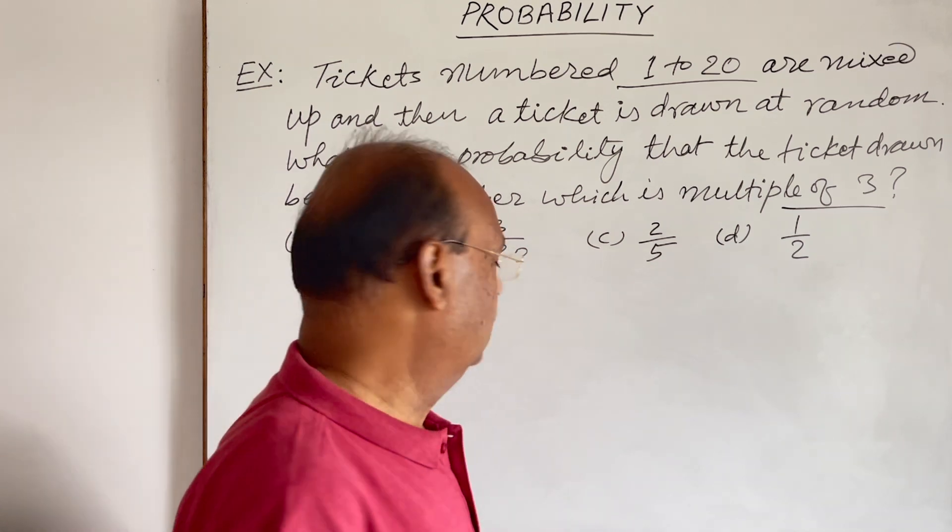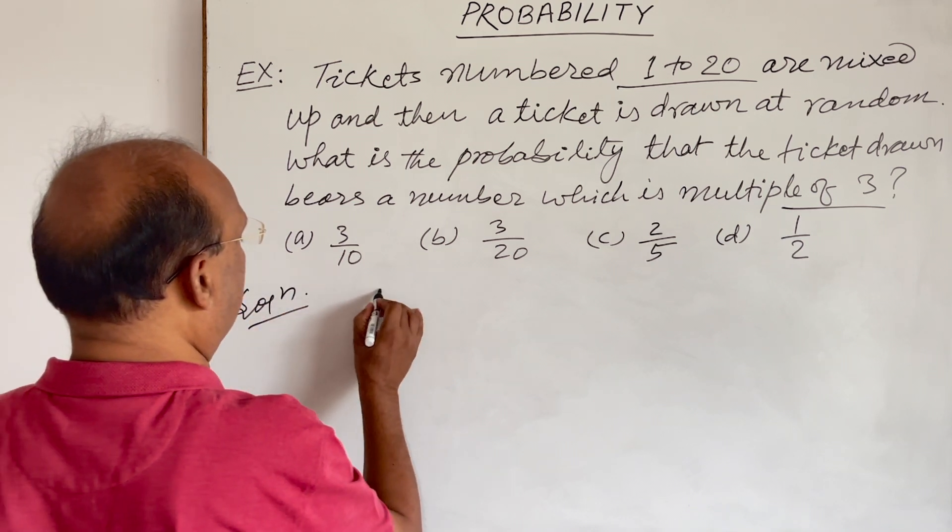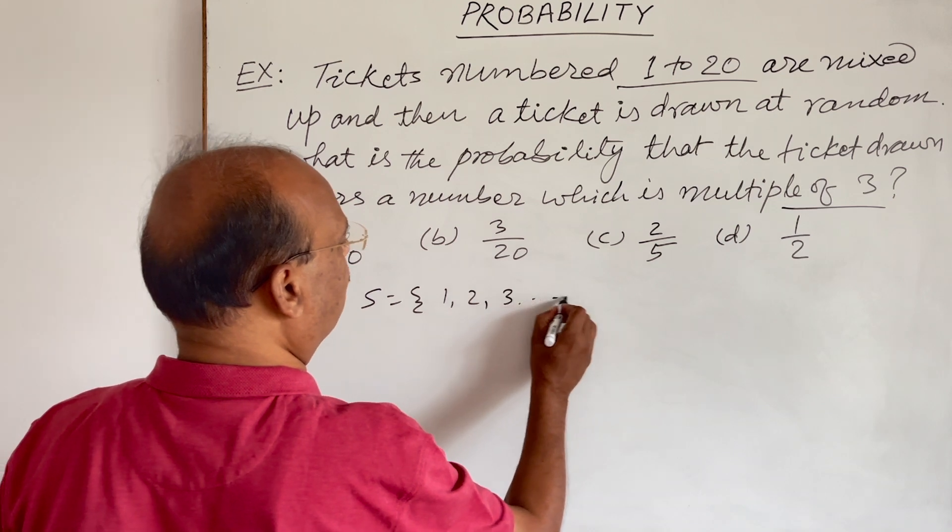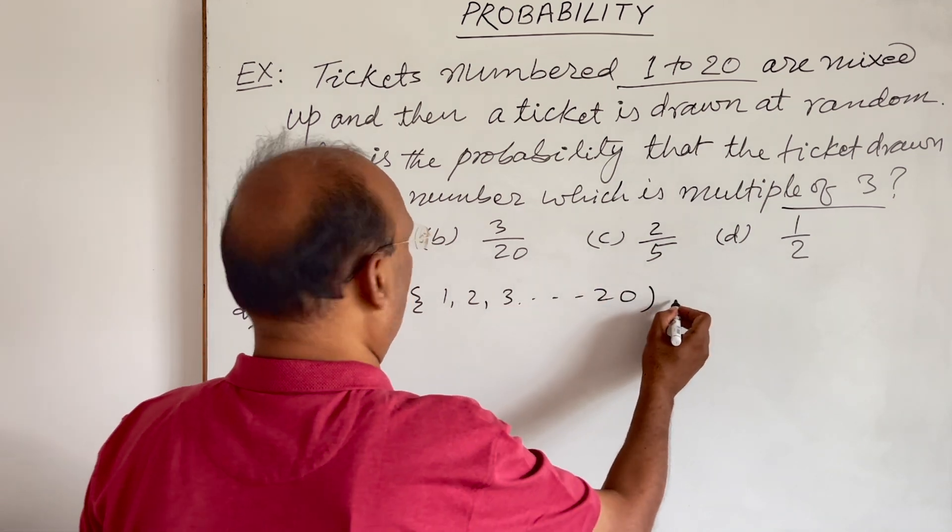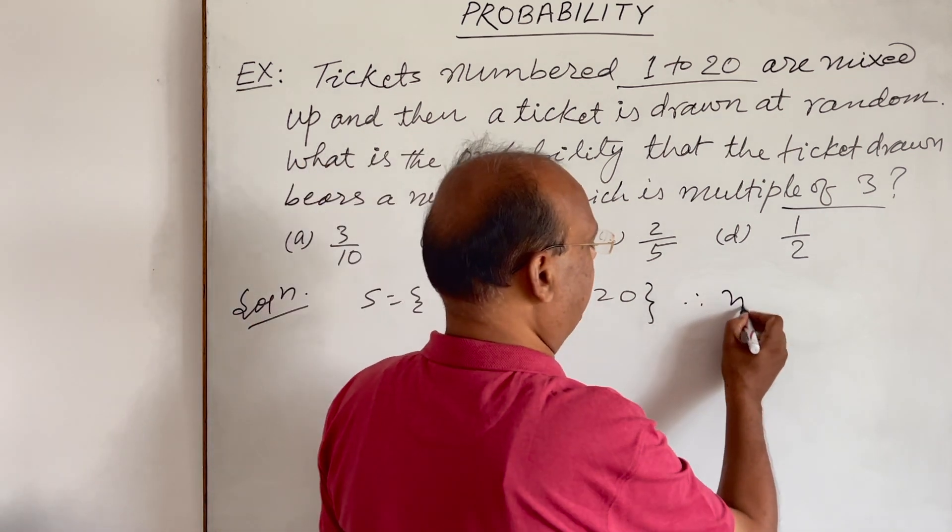So number of elements in sample space is 20. Let us see the solution here. The sample space is tickets numbering 1, 2, 3, up to 20. Therefore, number of elements in this sample space is 20.